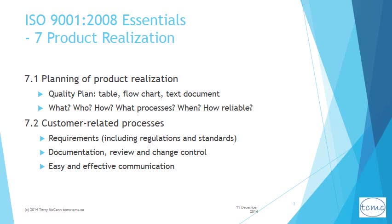Customer related processes are described under 7.2. How are customer requirements obtained, documented, and reviewed — bearing in mind that regulators are advocates on behalf of customers and the public, and they also have requirements? How are any changes introduced, documented, and controlled? What is the process for effective and easy two-way communication with customers regarding product or service information, inquiries, amendments, and customer feedback at key points in design and development?